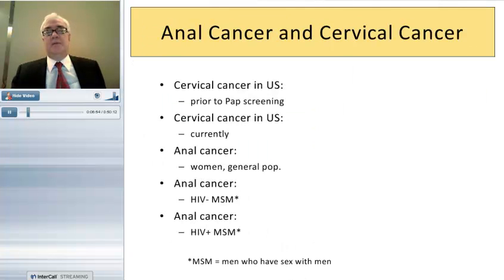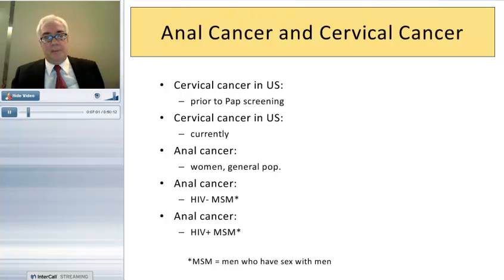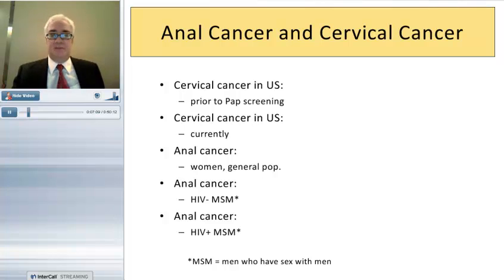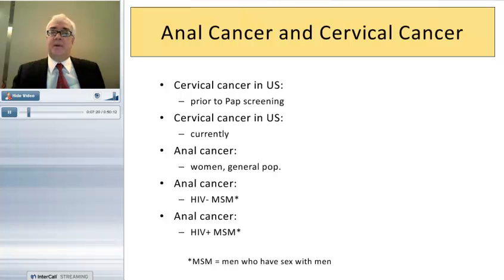Now let's talk about the risk groups for anal cancer. The incidence is certainly going up in the general population, but it is still relatively low. However, the risk of anal cancer is not evenly spread throughout the population — it is very much concentrated in some of the highest risk groups. This is a wonderful opportunity, because it means we can concentrate our screening and treatment resources on those populations.